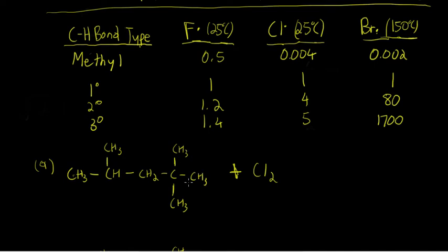These three carbons are also equivalent to one another but distinct from those two carbons, so the hydrogens they bear are all equivalent as well — giving you nine primary hydrogens here. You have two secondary hydrogens on this carbon, and one tertiary hydrogen on this carbon. So we'll get four distinct products.